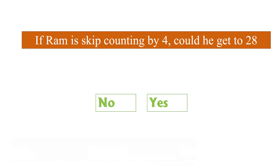If Ram is skip counting by 4, could he get to 28? There are two ways to do it. First, keep adding 4: 4, 8, 12, 16, 20, 24, 28 — yes! The second way is to apply the multiplication table: 4×7=28, so 28 is in the table of 4. The answer is yes, Ram can reach 28 by skip counting by 4.